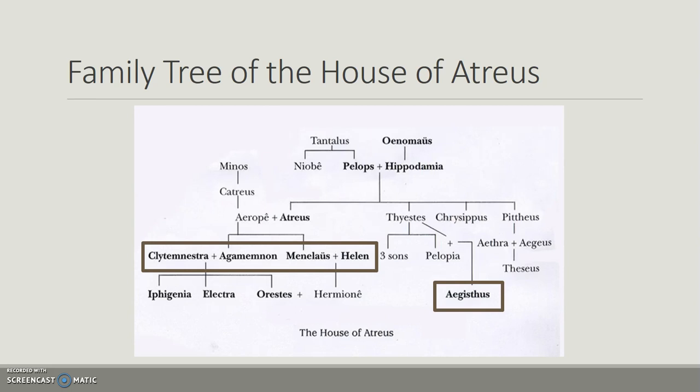Moving on to Agamemnon's generation: this is Agamemnon and his brother Menelaus. These two actually have a very good relationship — they are not competitive for the throne. Agamemnon is the elder brother, so he becomes the ruler of Argos, and he's looking around for opportunities for Menelaus to become a political player in other areas of Greece.